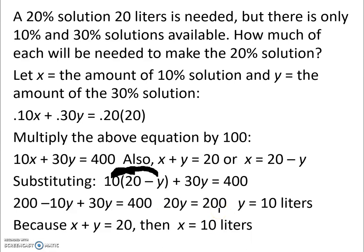We don't want 20y, so we divide both sides by 20 to find that y is equal to 10, and in this case, it is 10 liters. Because x plus y equals 20, then x must be 10 liters as well.